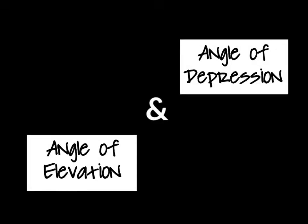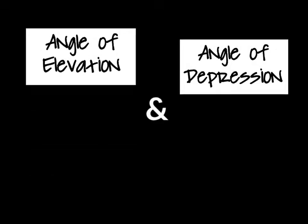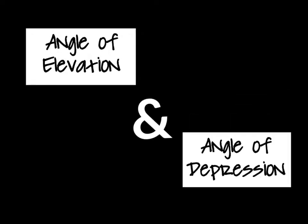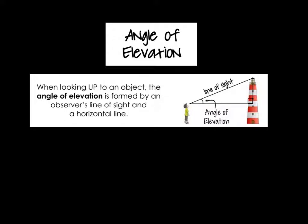In this video we're going to be talking about angle of elevation and angle of depression. As stated in your notes, when looking up to an object, the angle of elevation is formed by an observer's line of sight and a horizontal line. So the horizontal line is right here — this is your angle of elevation.